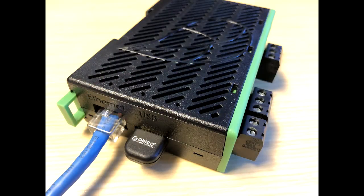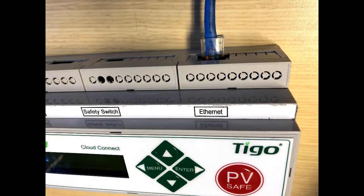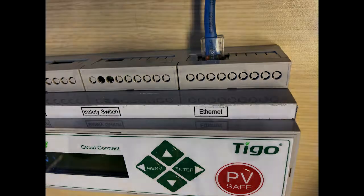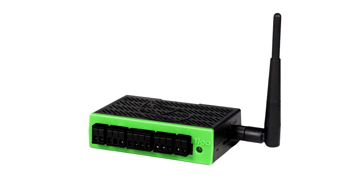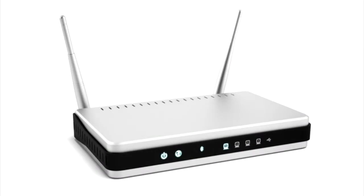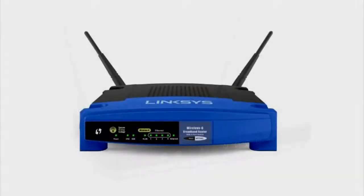If there is a cable connected to the Ethernet port on your data logger, then an Ethernet connection is being used. The Cloud Connect and Cloud Connect Advanced can also connect via Wi-Fi. If a Wi-Fi connection is being used, then your data logger is connecting to a Wi-Fi router.